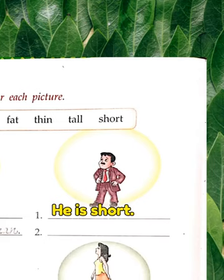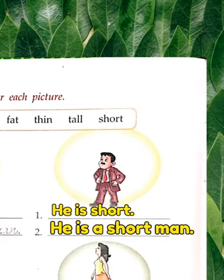For example, if it is a man who is tall, we write: 'He is a tall man.' And if he is short, we write: 'He is a short man.'